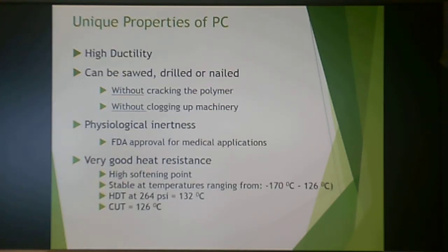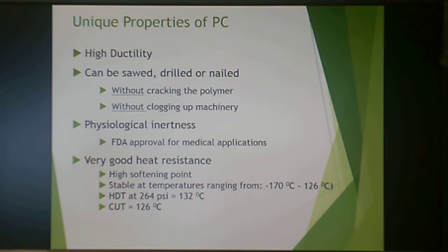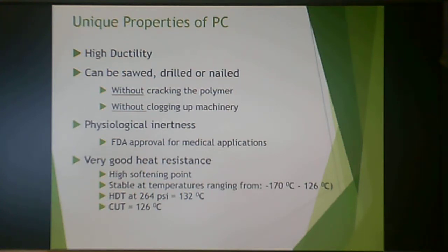Polycarbonate has very high ductility and flexibility, which also helps with its bullet-resistant nature. It can be sawed, drilled, or nailed without cracking or clogging machinery. It is physiologically inert, so it can be used for medical applications with FDA approval. It has very good heat resistance, though this also makes it more difficult to process. It can be stable at temperatures ranging from minus 170°C to 126°C.